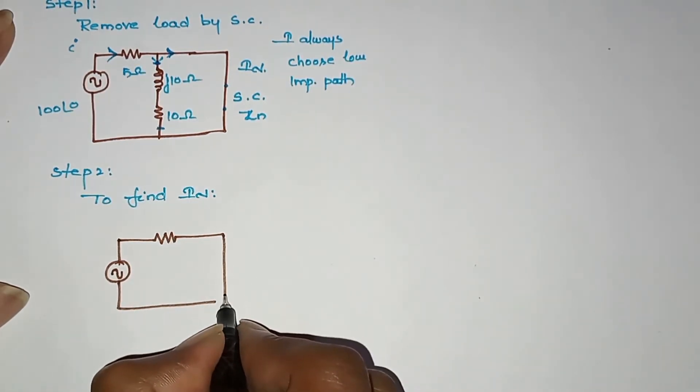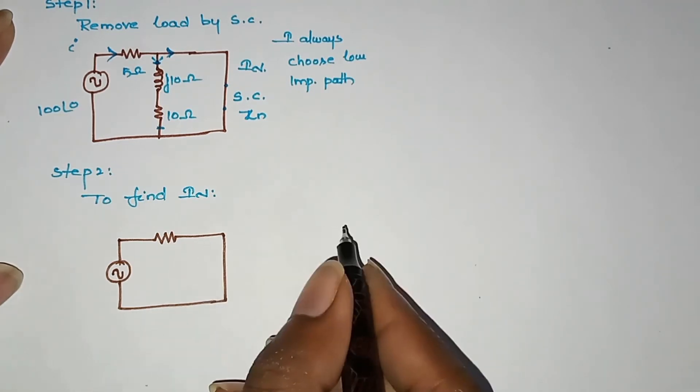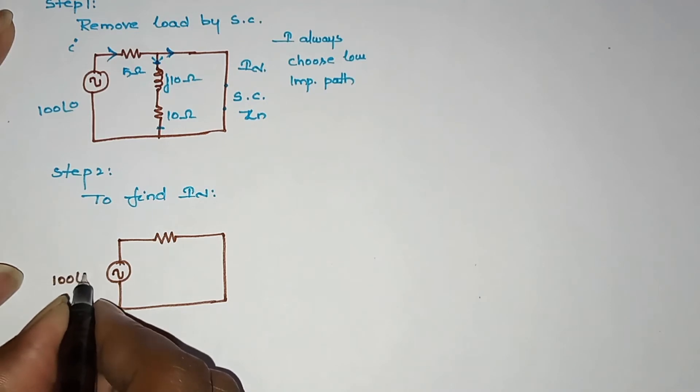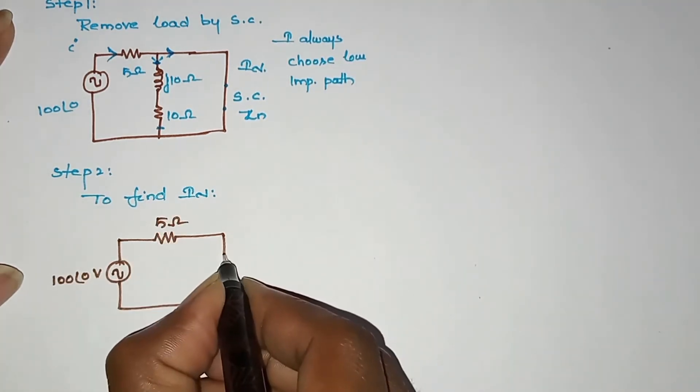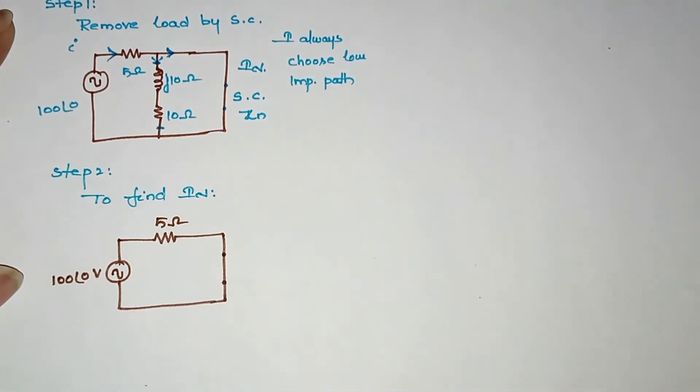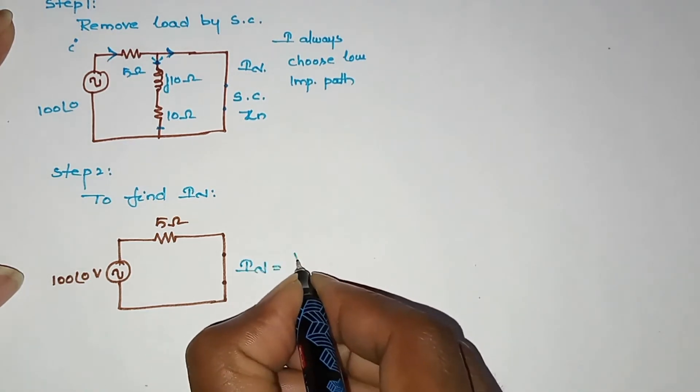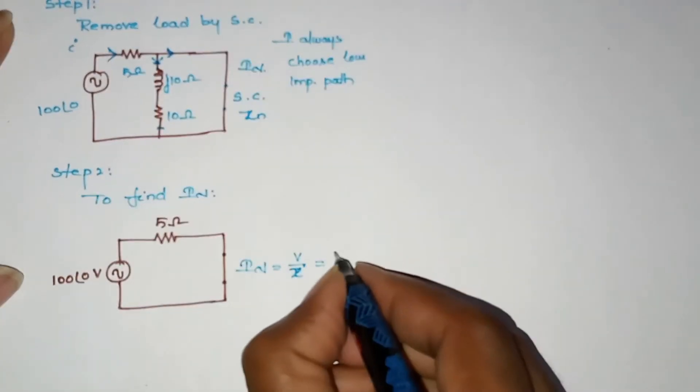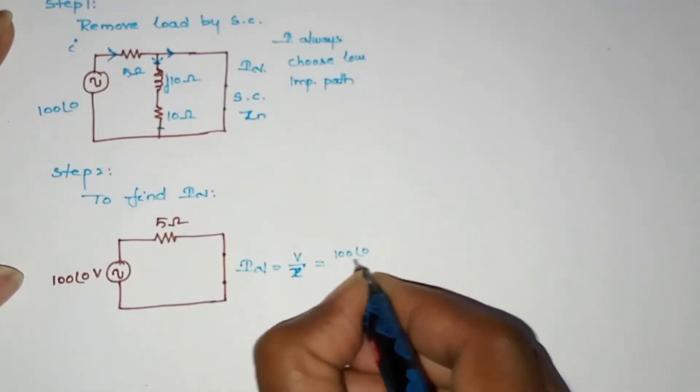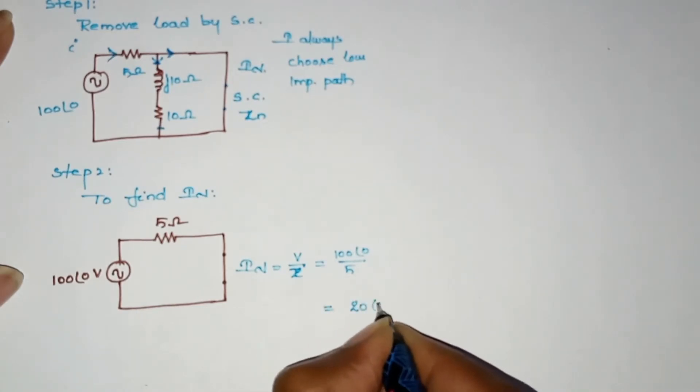In the source, actually we will neglect the impedance path. So 100V at 0 degrees. Here we have 5 ohms, here we have the IN value. In the IN value, we will apply simple ohm's law. V by Z. So 100 at angle 0 by 5, that means 20 at angle 0 ampere.